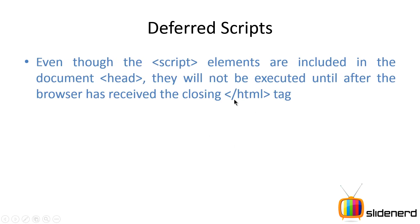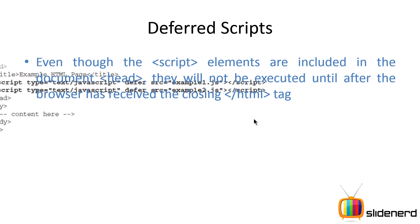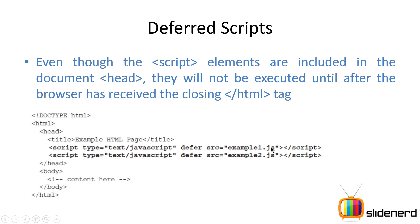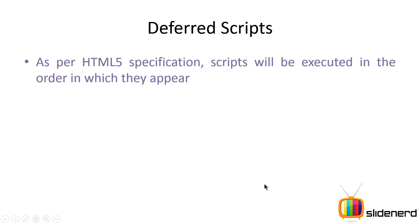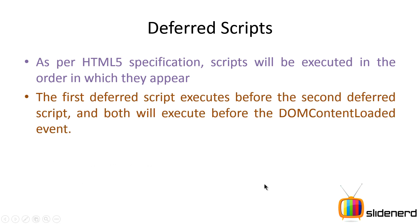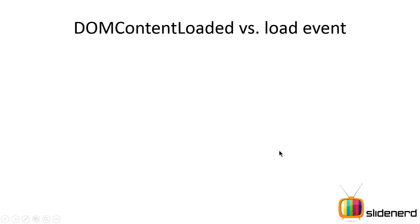Having the defer attribute signals the browser that the download should begin immediately but the script should be executed later. Until the closing slash HTML tag is not found, the script will not be executed — it will be downloaded but executed later. With two external deferred JavaScript files, they run one after the other in perfect order, and both will execute before the DOMContentLoaded event.